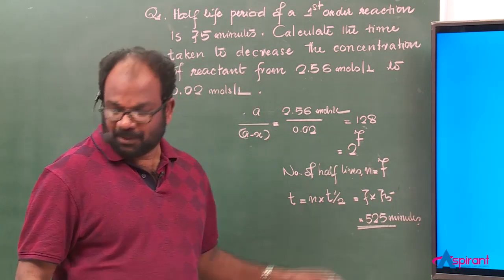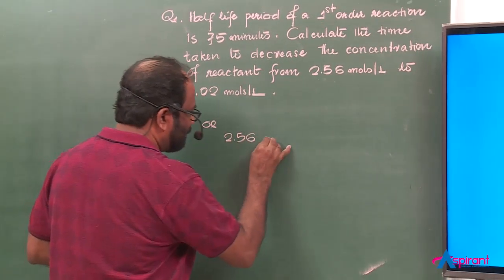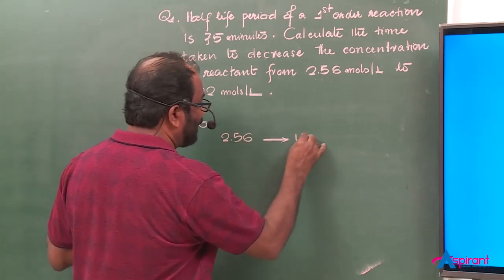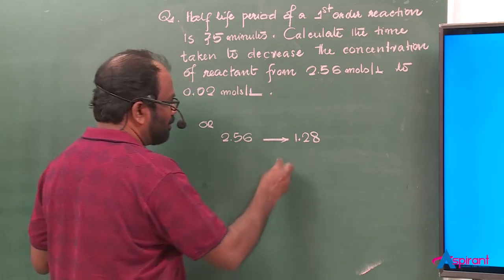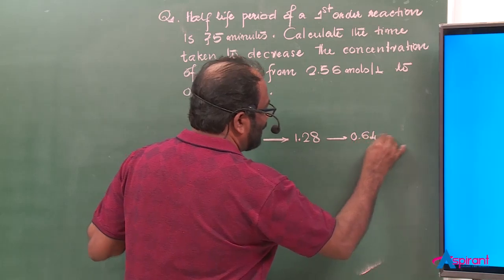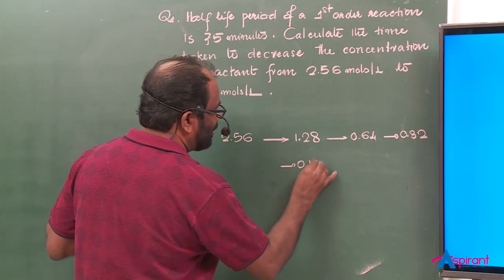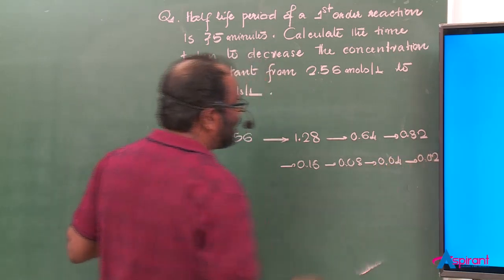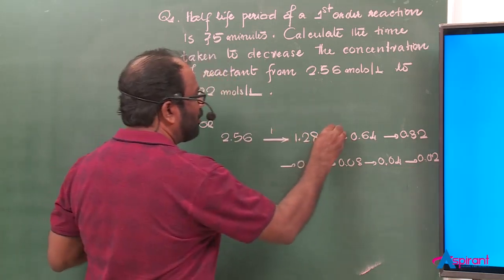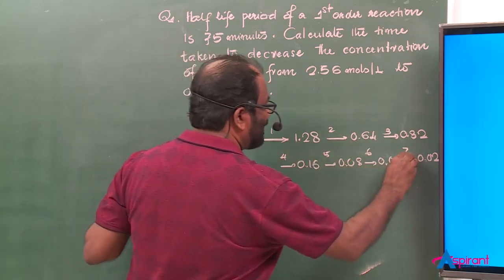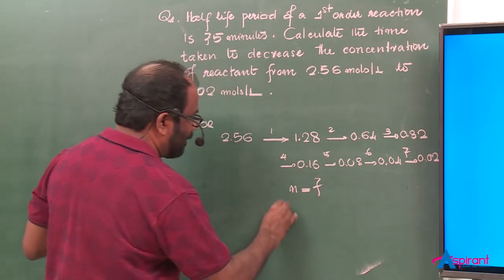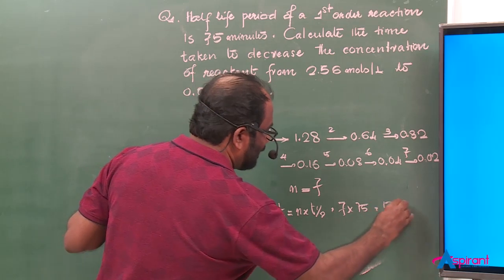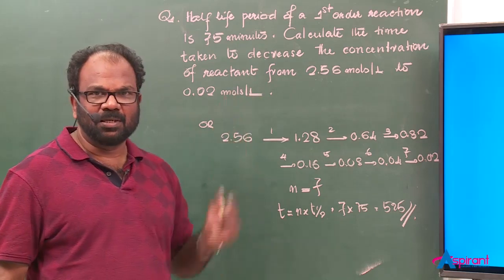Here is the alternative method. Starting with initial concentration 2.56 moles per liter: after one half-life, it becomes 1.28; then 0.64; then 0.32; then 0.16; then 0.08; then 0.04; then 0.02. Counting from 2.56 to 0.02, we get 7 half-lives. So N equals 7, and total time T equals N times T-half equals 7 times 75, which equals 525 minutes.